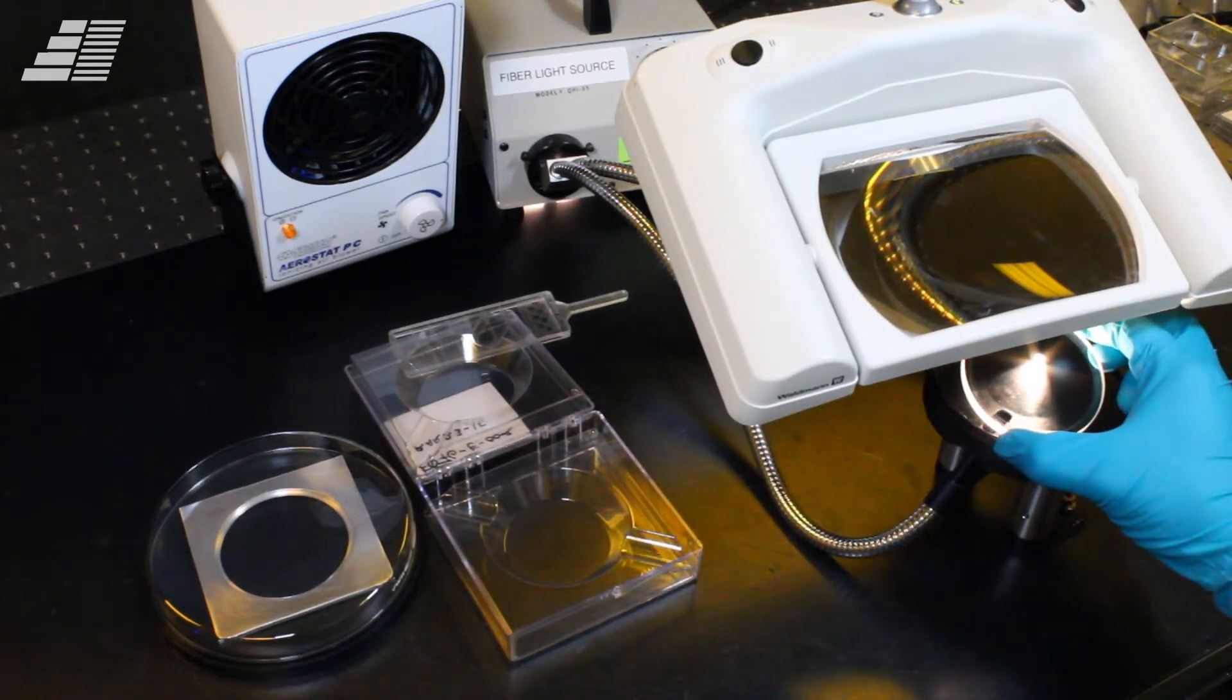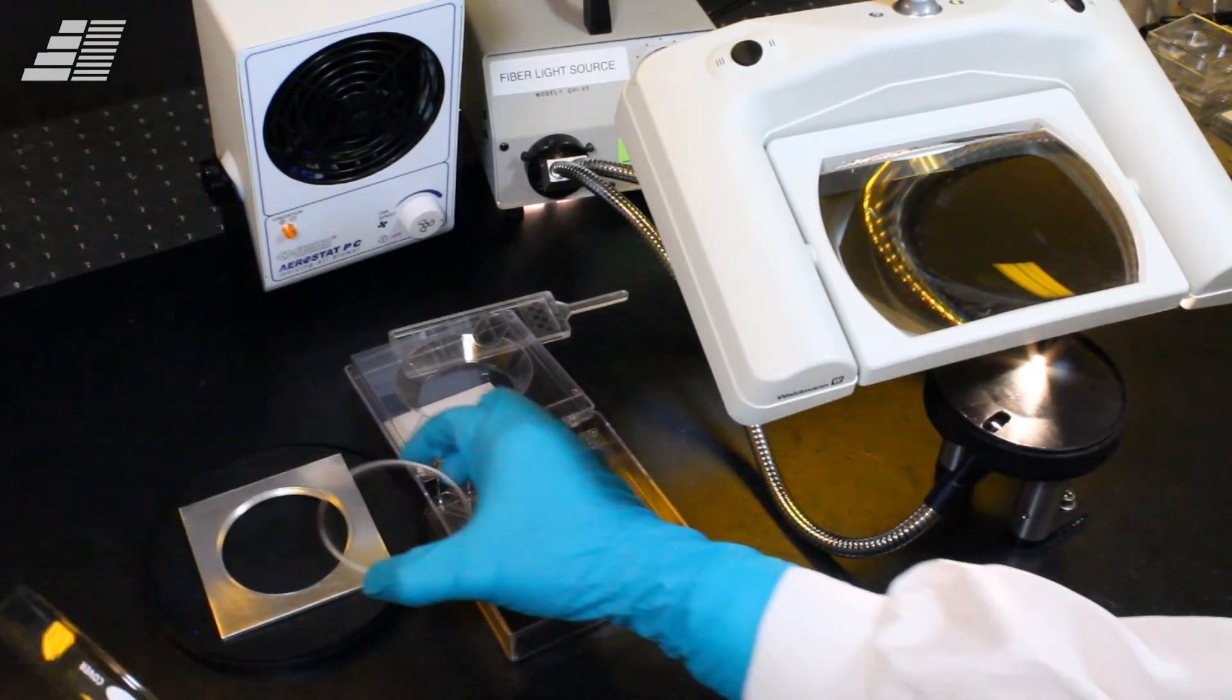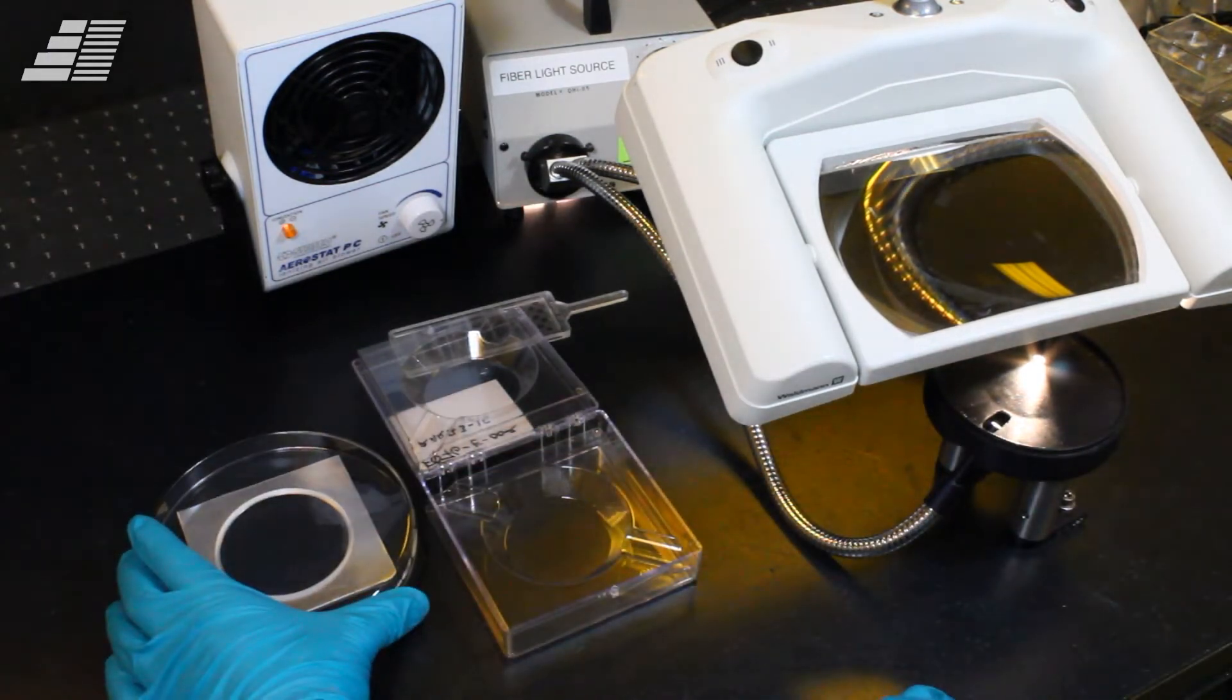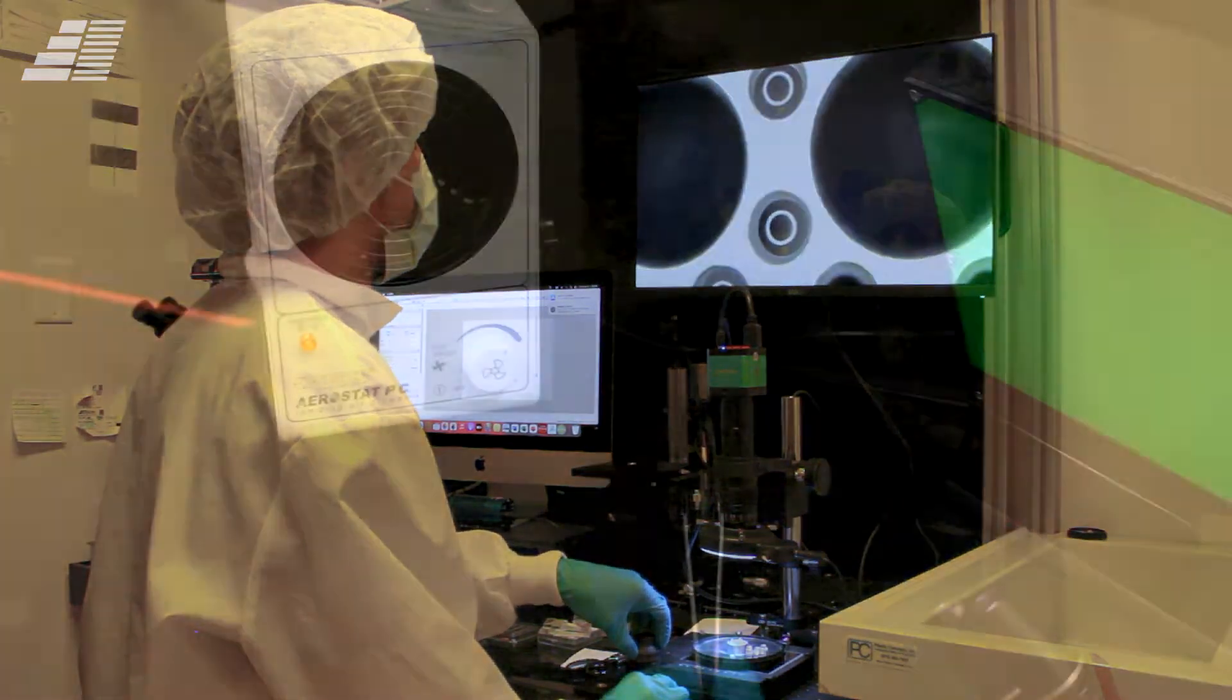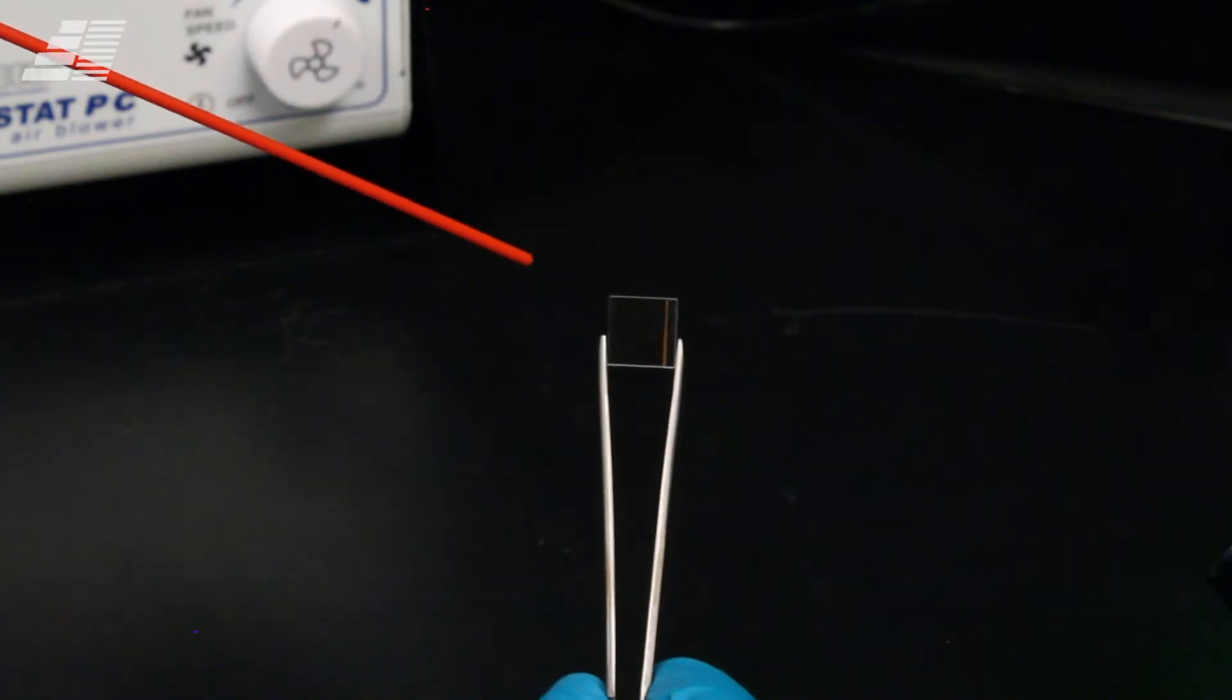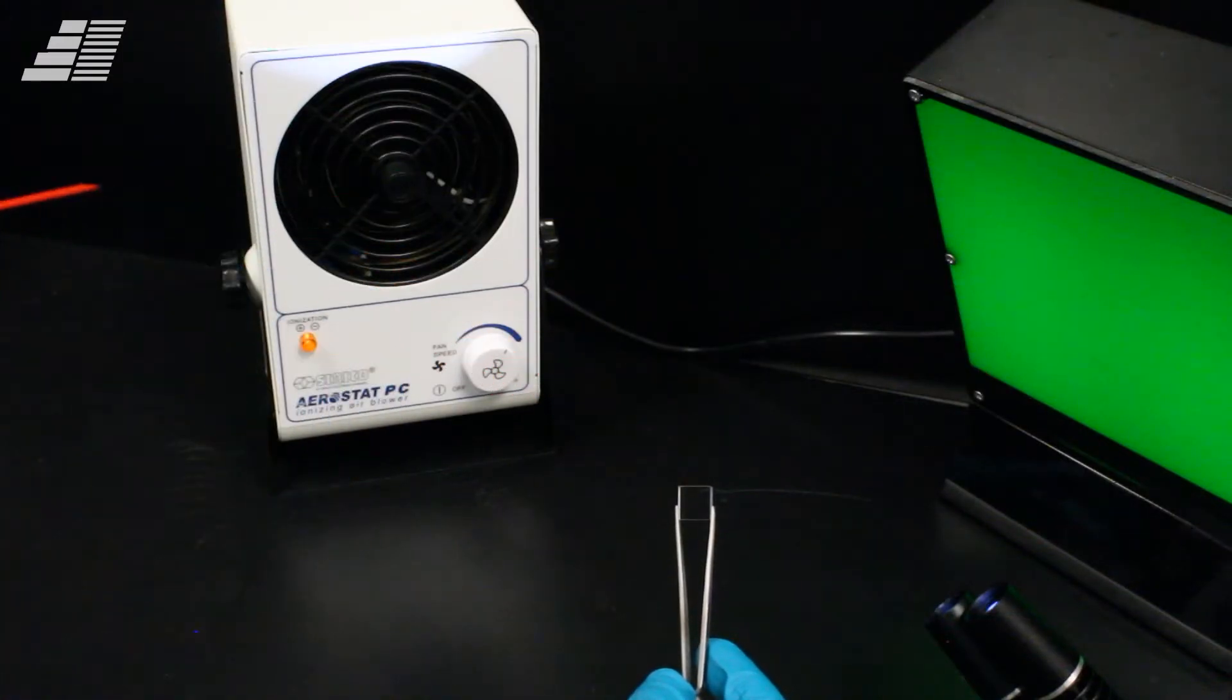Cleaning begins with removal of the optic from its original PETG package and inspection using a bright light source such as the fiber guided light shown here illuminating the optic from the side. For very small optics, you may need a magnifying lens or a video camera with magnification. Start by blowing filtered air from a pressurized can or your lab's compressed air system over the optic to remove any dust particles or fibers.